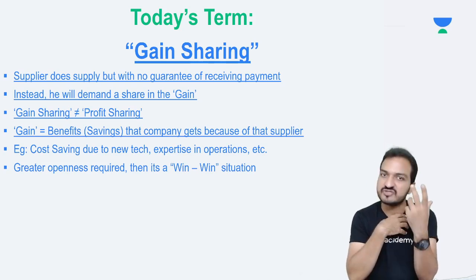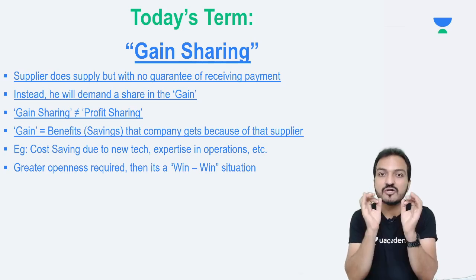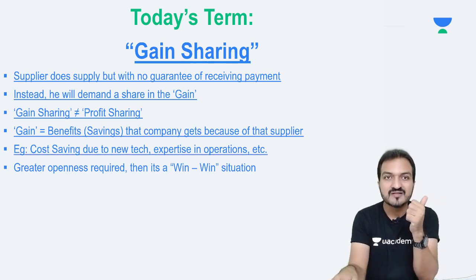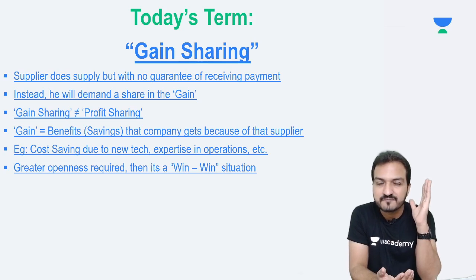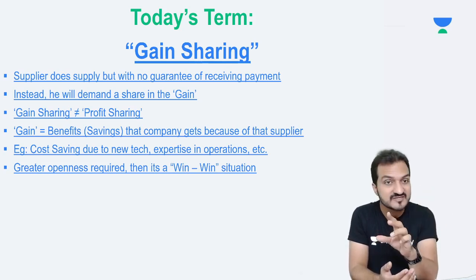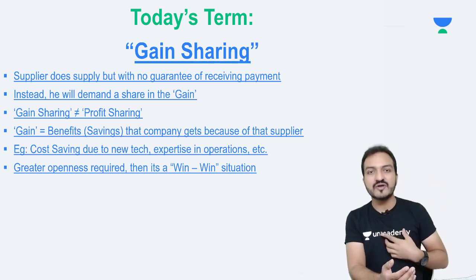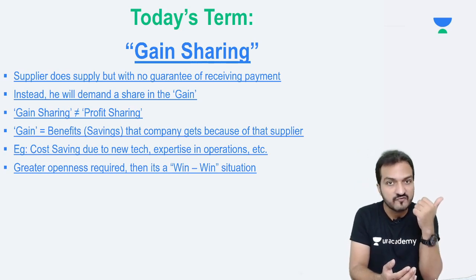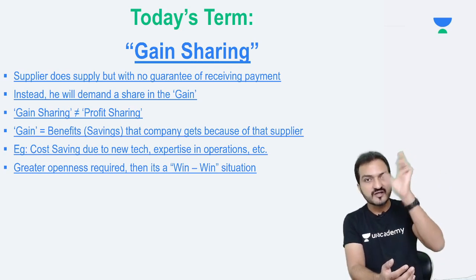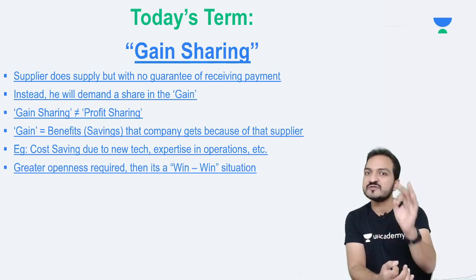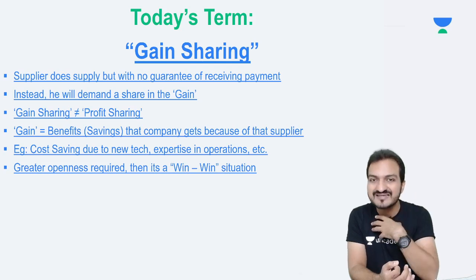Win-win, because I am winning because I am saving some cost, and he is also winning because he is getting some money out of his services. Of course, in this case there is a lot of risk on that supplier. Why? Because the supplier is supplying me services without any commitment of fixed payment. If I don't make any savings, then he will get zero — he gets his share of the gain only if I make some savings. The supplier is at much greater risk because he is giving me his technology and expertise without any guarantee of receiving payment. For me, if I make savings I give him the share; if I don't make savings, I continue whatever I was doing earlier. So for my side, there is very little risk involved.